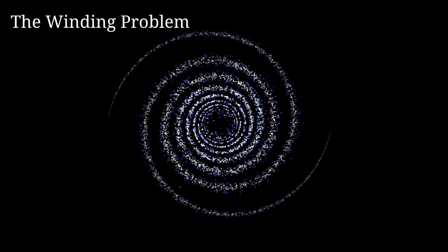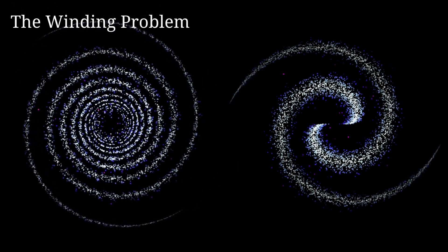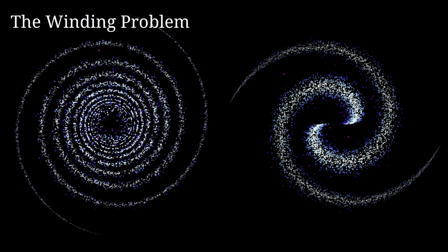This is known as the winding problem. However, observations show that spiral arms persist without significant change over long periods.